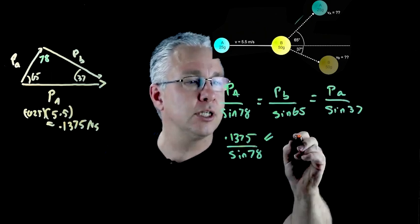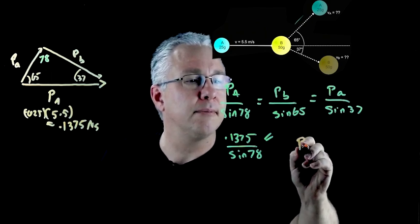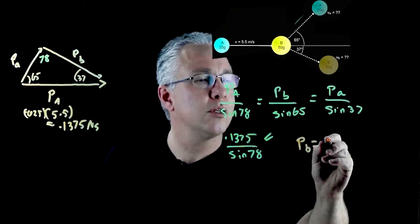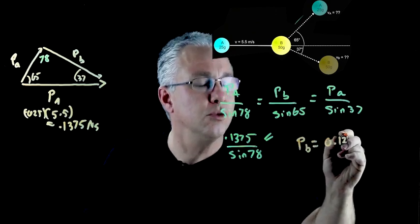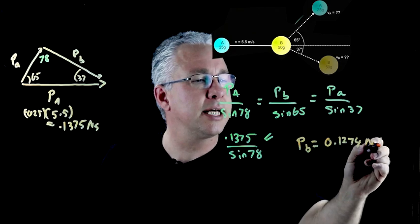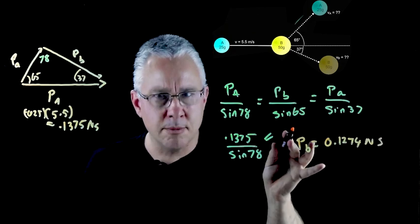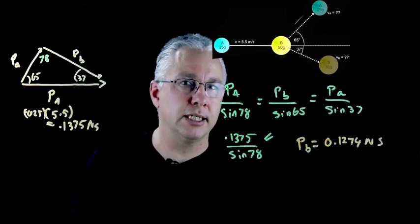So if you do that calculation you can work out Pb. Pb equals 0.1274 newton seconds. But hold on, that's the momentum of B after the collision.